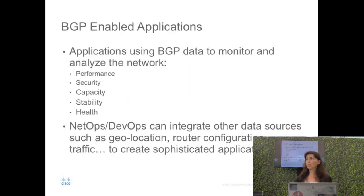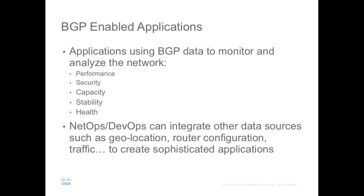What we mean by BGP-enabled applications is that BGP data has a very rich set of intelligence that has not yet been explored by developers. It looks quite confusing and has lots of numbers, but using this data, developers will be able to analyze their network, analyze network performance, check for security holes, and look at capacity, stability, and health of the network. You can also incorporate other data sources like geolocation, where prefixes are originated from, and router configurations to create sophisticated applications.